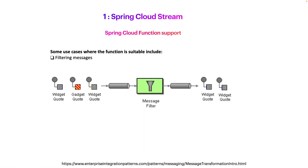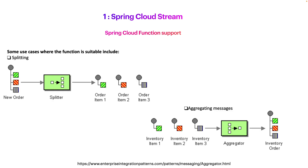Looking at this, we can understand that we can also use the Function to filter messages. For example, as shown in this diagram, we are receiving some widgets and gadgets, and we apply a filter using the Function in order to keep only the widgets. We don't need the gadgets. This is a great way to filter messages based on certain criteria — we take the payload and filter it.